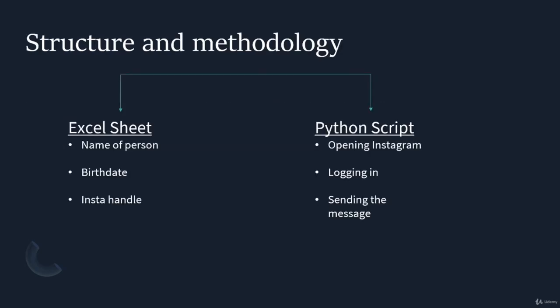Next I'll go to the structure and methodology on how I plan to tackle this problem. This problem will be solved with two different things: firstly an Excel sheet, and secondly the Python script. The Excel sheet is essentially a data storage — it stores the name of your friend, your friend's birthday, and your friend's Instagram handle name. That's only three columns. The Excel sheet and Python script are interconnected, meaning the Python script basically reads the Excel sheet using the Pandas library.